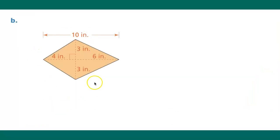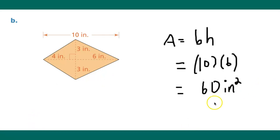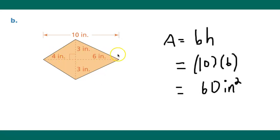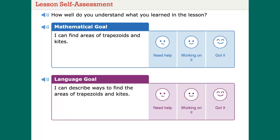Let's try one last example. This is a kite with bases of three and three and heights of four and six. You could also see it as a height of six with a base of ten. Since it is a quadrilateral, we can solve it using base times height: ten times six equals sixty square inches. You don't need to find the area of each triangle and multiply by two — just think of it as a parallelogram-like shape and solve it directly.